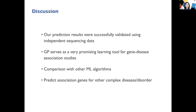Our prediction results were also successfully validated using an independent sequencing dataset. To wrap up: in this project, we showed that GP can serve as a promising learning tool for this complex bioinformatics problem — gene-disease association studies and prioritization of disease genes. In the future, we would like to compare our linear GP performance with other machine learning algorithms — random forest, support vector machines, and deep learning — and also apply our methodology to predict associated genes for other complex diseases or disorders.